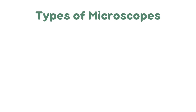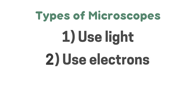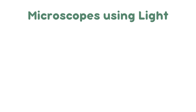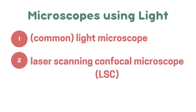There are two types of microscopes you need to know about for A-level biology: those that use light and those that use electrons. Now we're going to go over the microscopes that use light. The first one is the common light microscope, and the second one is the laser scanning confocal microscope, also known as the LSC microscope.